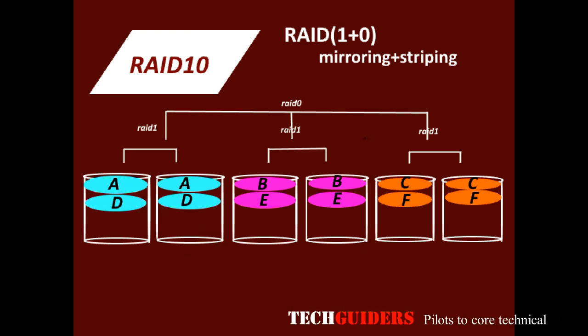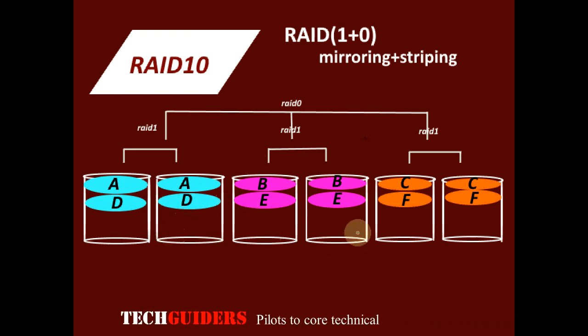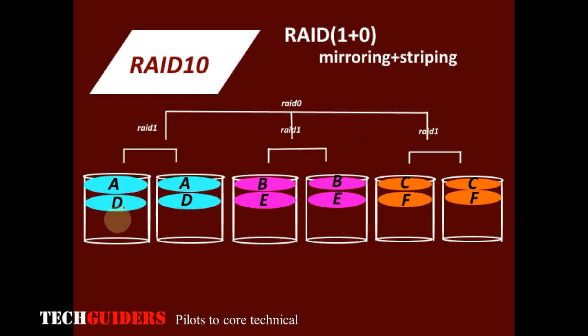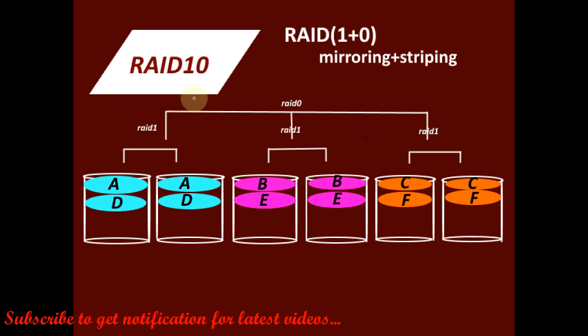Since striping requires a minimum of 2 disks and mirroring also requires a minimum of 2 disks, the minimum number of disks required for RAID 10 is 4.